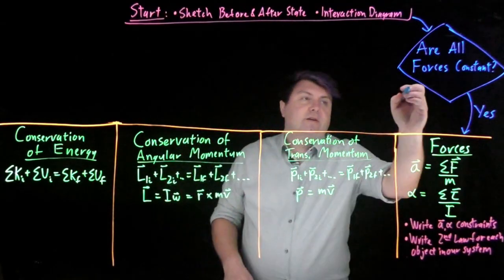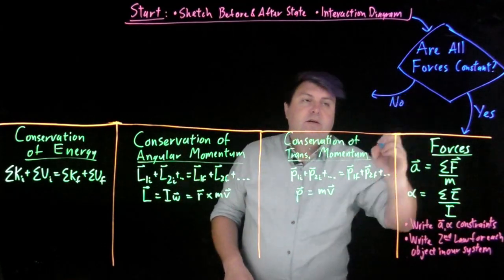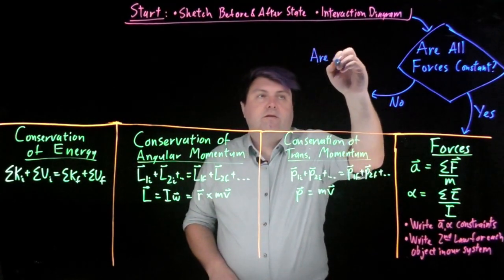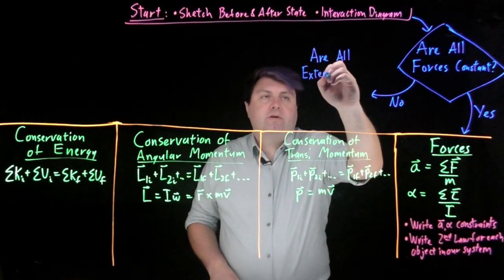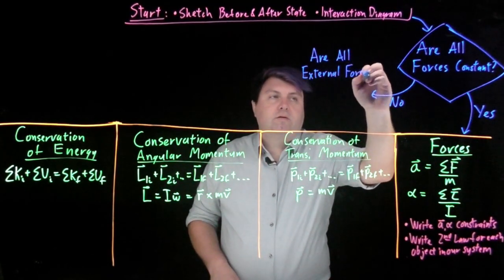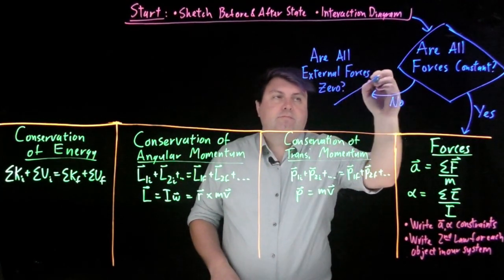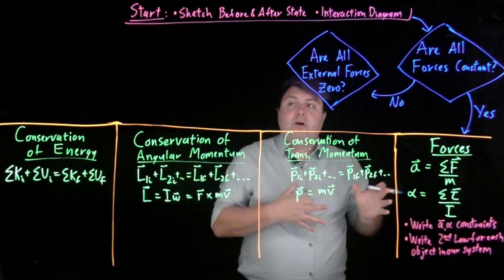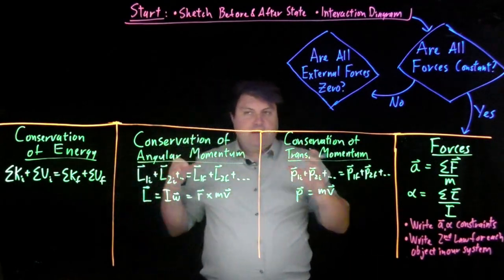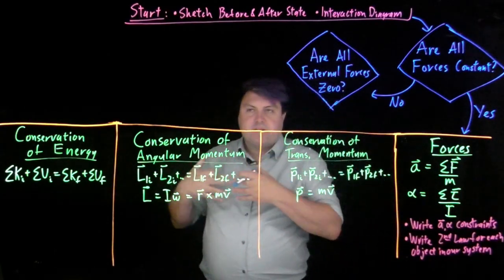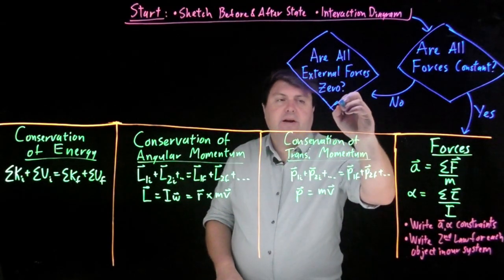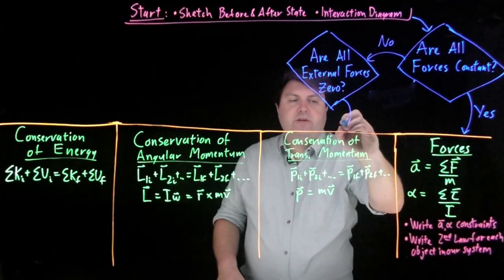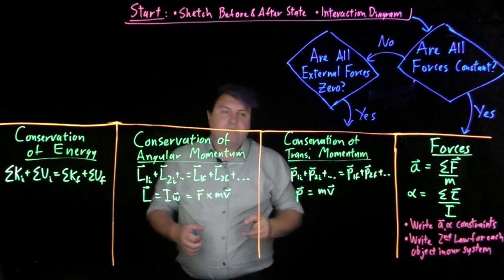If our forces aren't constant, then of course we might say no. And then our next question we want to ask is, are all external forces zero? If we can write an interaction diagram, if we can define a system in which we don't have any external forces, or that the internal forces are so much larger than the external forces that we can use the impulse approximation to say they're inconsiderate, or not really needed. We'll have this maybe up here. So if we can say that the external forces are zero,